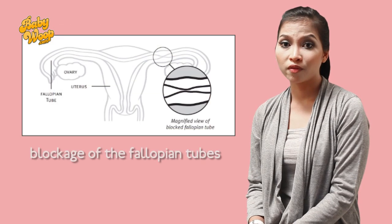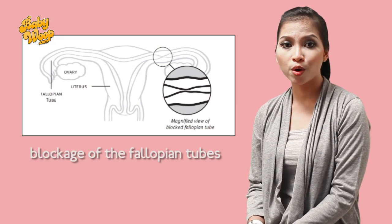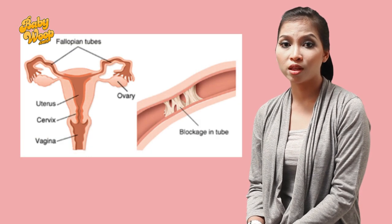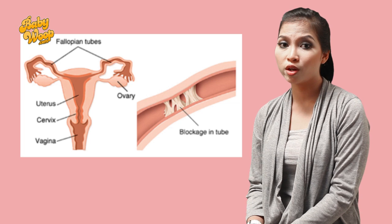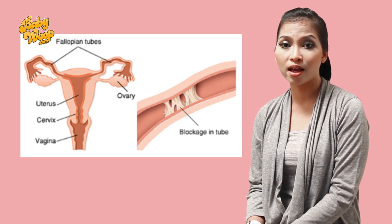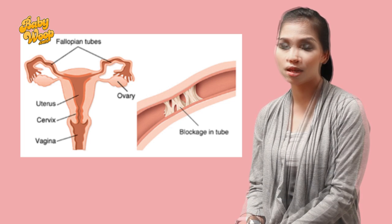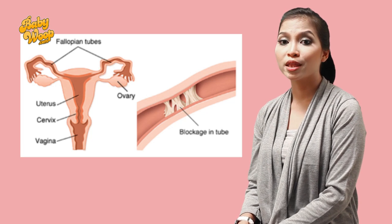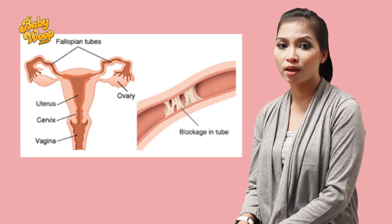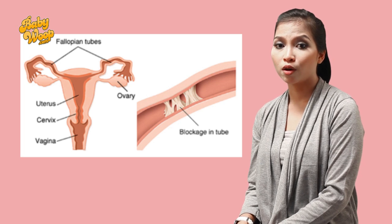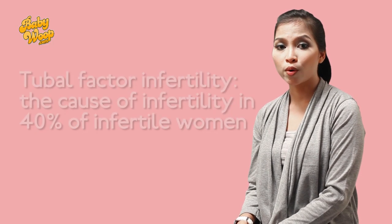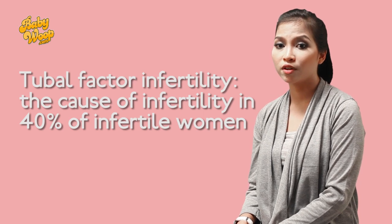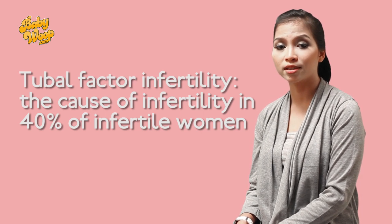To understand what blocked Fallopian tubes are, you need to know what a Fallopian tube is. The Fallopian tubes are two thin tubes, one on each side of the uterus, which help lead the mature egg from the ovaries to the uterus. When an obstruction prevents the egg from traveling down the tube, the woman has a blocked Fallopian tube. It can occur on one or both sides. This is also known as tubal factor infertility, and this is the cause of infertility in 40% of infertile women.